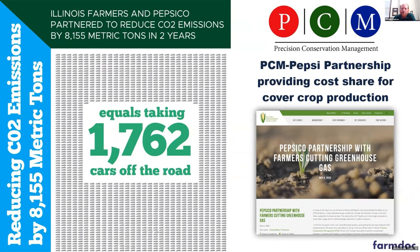Another point on the cover crop side is a private partnership between PepsiCo and PCM farmers, with PepsiCo providing corporate dollars to do some cost-sharing on cover crop practice adoption. You can see some of the metrics associated with that partnership that have already been realized in terms of emissions reductions. This is recognition that corporate partners are really seeing value in working with farmers and helping agriculture lead the way in conservation strategies to achieve things like emissions reductions.